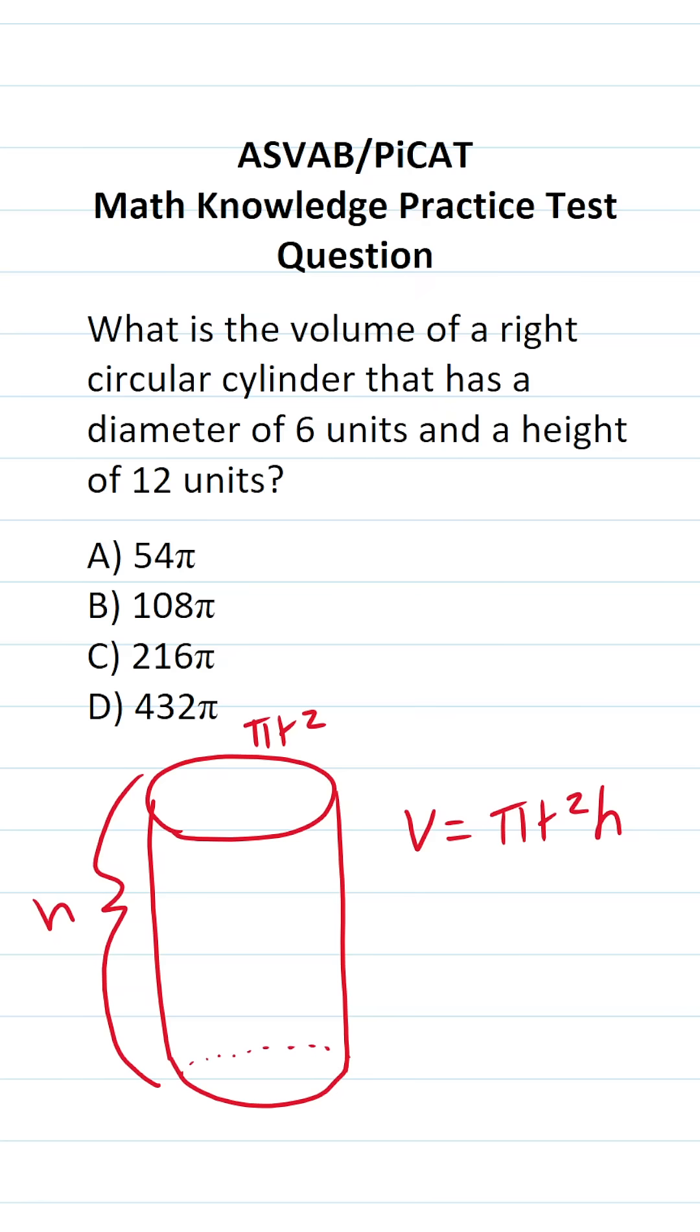And just like that, I derived the formula to calculate the volume of a right circular cylinder. It's pi r squared - this is the area of the circular face times the height of the cylinder.